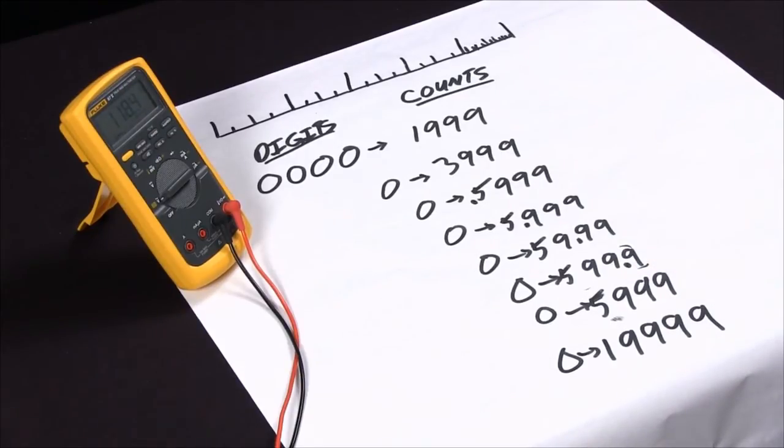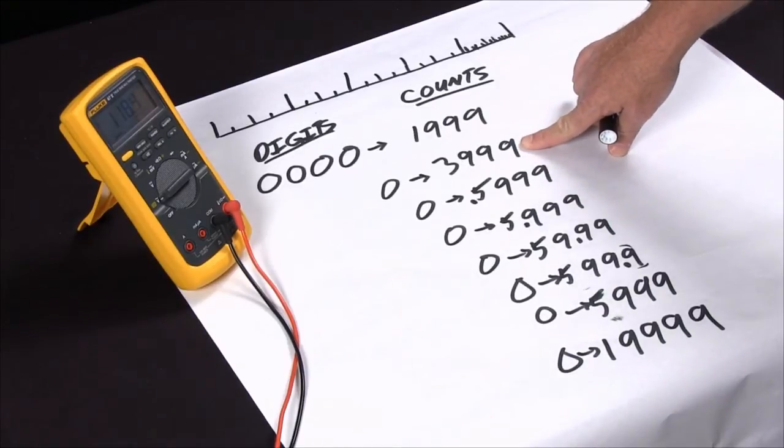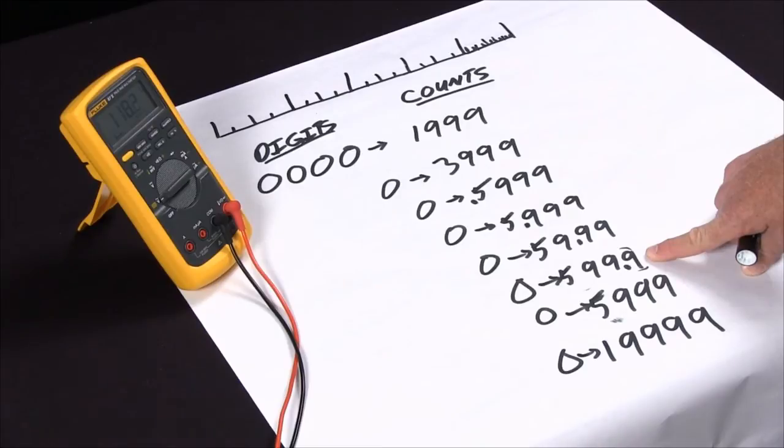Why we went to 6,000 counts is with this meter, it would range up at 400 volts. You would not be able to see 480 volts with a tenth of a volt resolution. So by going to 6,000 counts, we've actually given you a little extra in your meter that you didn't expect.